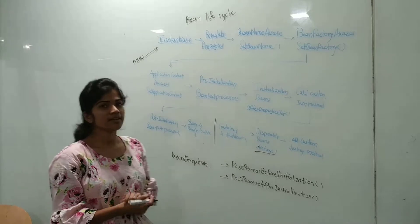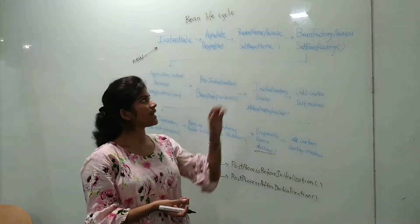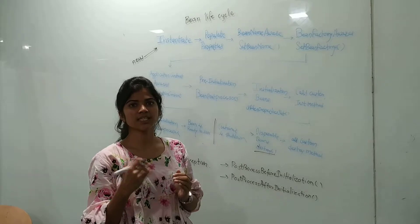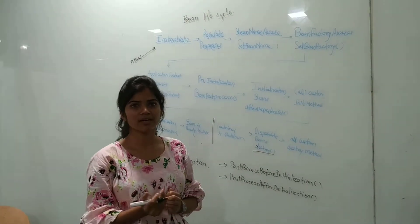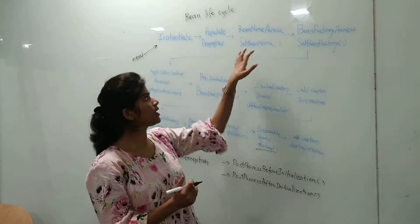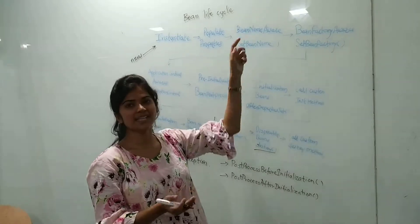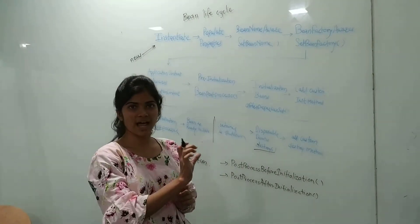Whenever we want to get the name of the bean, that is the name of the object, we want to be aware. To get the name of the object, we use BeanNameAware as an implementation.